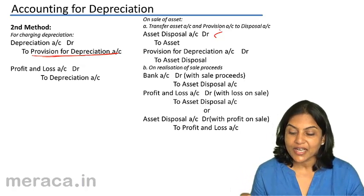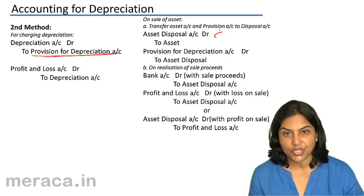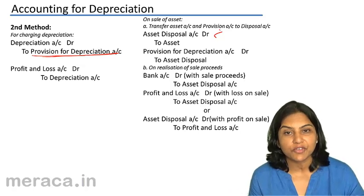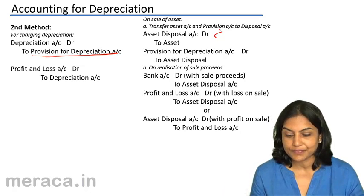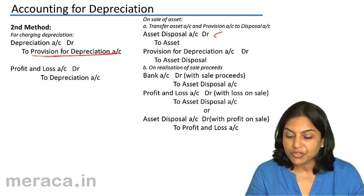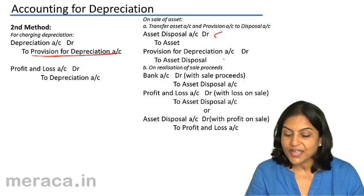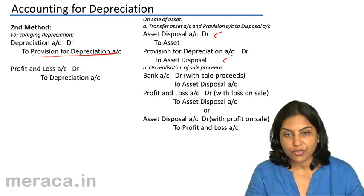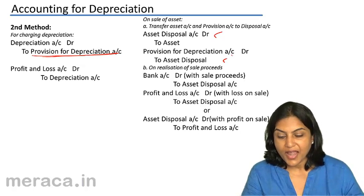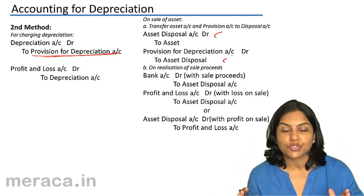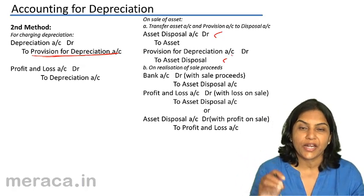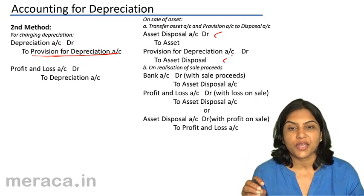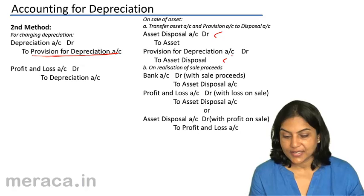Similarly, we transfer the provision for depreciation account. The provision for depreciation account always has a credit balance, so we debit the provision for depreciation account to close it, and credit the asset disposal account. As a result, the asset disposal account now holds a value which is the book value of the asset.